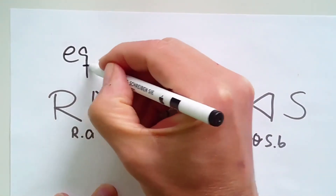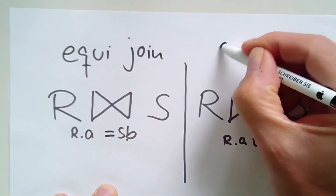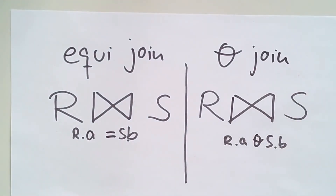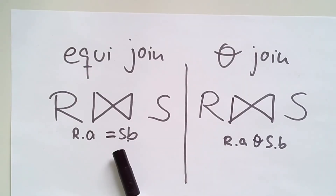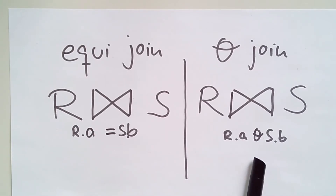So here is the equi join, and here is the theta join. Both of these will receive some attention in this particular chapter. You could say that the equi join is the predominant and important join, and you probably would be right, because equi joins are used to assemble rows that stem from foreign key relationships. But we will consider theta joins as well.